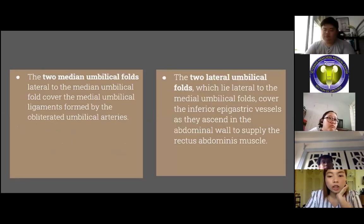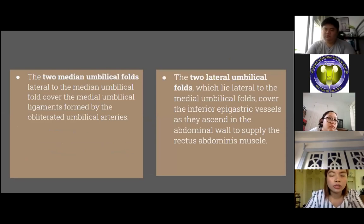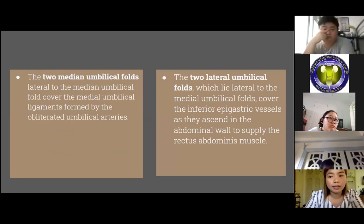The two medial umbilical folds lateral to the median umbilical fold cover the medial umbilical ligaments formed by the obliterated umbilical arteries. The two lateral umbilical folds are located lateral to the medial umbilical folds and cover the inferior epigastric vessels as they ascend into the abdominal wall to supply the rectus abdominis muscles.